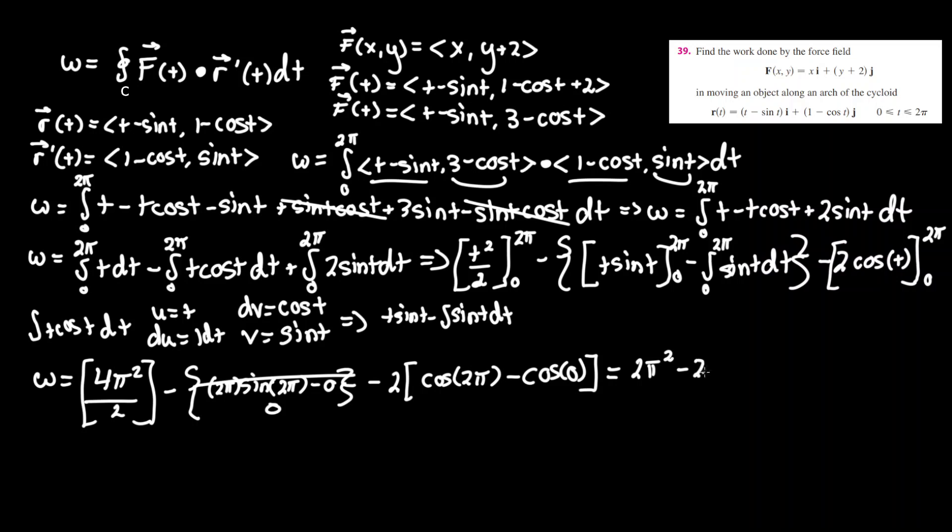Minus 2 times cosine of 2pi is cosine of 0, which is 1, and cosine of 0 is 1, but you take the negative minus 1.